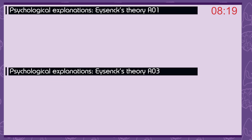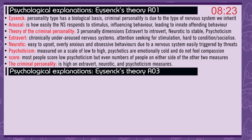Psychological explanations — Eysenck's theory. Eysenck thought personality type had a biological basis — that the criminal personality is due to the type of nervous system we inherit. Arousal is how easily the nervous system responds to a stimulus, influencing behaviour and leading to innate offending behaviour. The theory of the criminal personality is based on three personality dimensions: extrovert to introvert, neurotic to stable, and psychoticism. Extroverts have chronically underaroused nervous systems, so they attention-seek for stimulation and are hard to condition and socialise. Neurotic means the person is easy to upset — overly anxious with obsessive behaviours, due to a nervous system easily triggered by threats. Psychoticism is measured on a scale of low to high; psychotics are emotionally cold and don't feel compassion. Most people score low on psychoticism. The criminal personality is high on extroversion, neuroticism, and psychoticism.